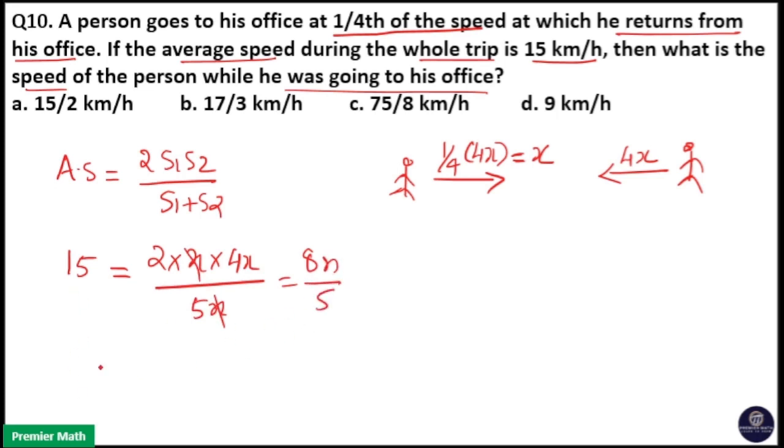So 15 into 5 is equal to 75, and 75 by 8 is equal to x. So option C is your answer.